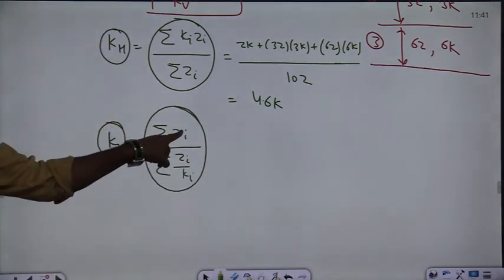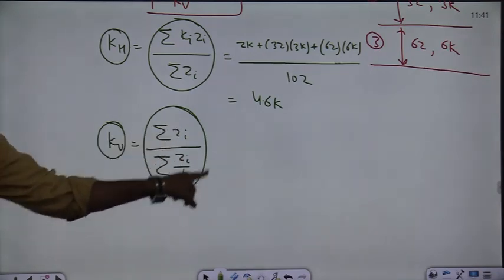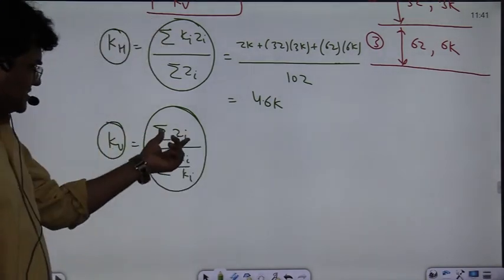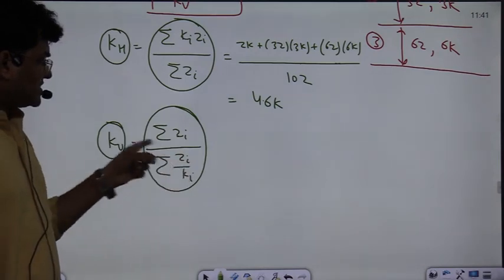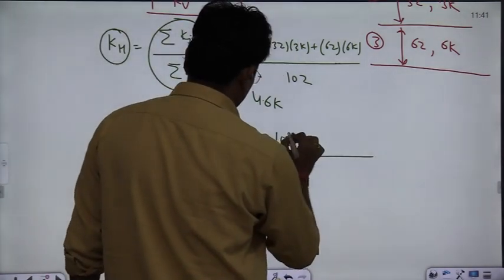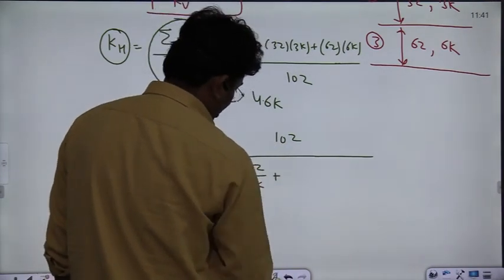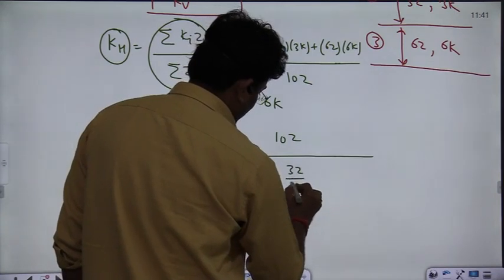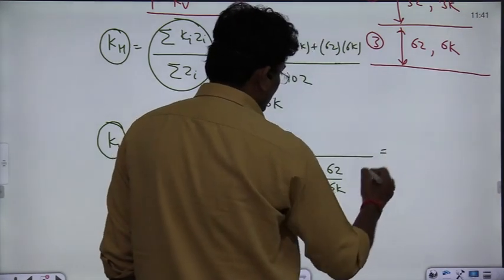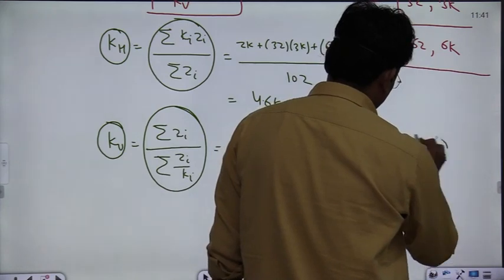The layers are z by k, plus 3z by 3k, plus 6z by 6k. The summation of zi is 10z, so the result you will get here is 3.33 times k.